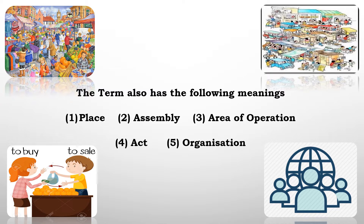The fifth concept is organization. Market can also refer to the organization dealing with marketing. When an organization is involved in buying and selling, or in producing a product and taking it to the ultimate customers, that organization can also be called a market. So the term market has the meanings of a place, an assembly, an area of operation, an act, or an organization.